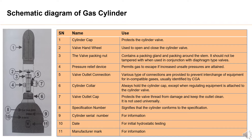5. Valve Outlet Connection — various types of connections are provided to prevent interchange of equipment for incompatible gases, usually identified by Compressed Gas Association (CGA). 6. Cylinder Collar — always holds the cylinder cap, except when regulating equipment is attached to the cylinder valve. 7. Valve Outlet Cap — protects the valve thread from damage and keeps the outlet clean; it is not used universally.